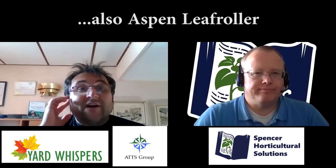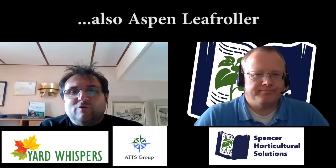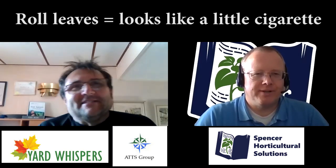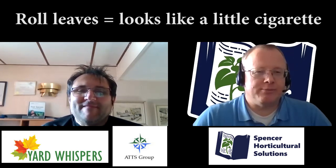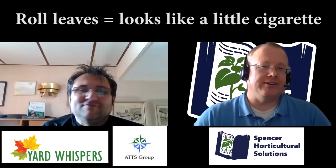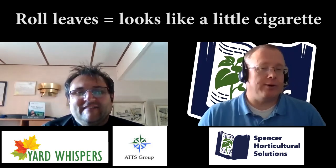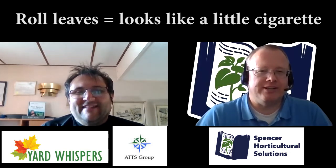Another very common one in Alberta is the Aspen leaf roller. It's very interesting and unique — they roll the leaves and you can see it like a small little cigarette or roll. Oftentimes when I get calls about it, they're already gone. It's not a terribly serious one, but it definitely shows up and it's very interesting when all of a sudden your leaves are all rolled up on your tree.